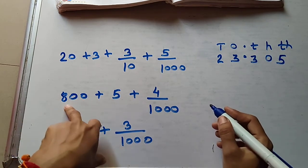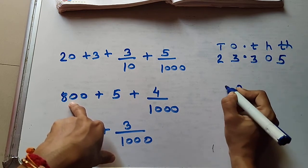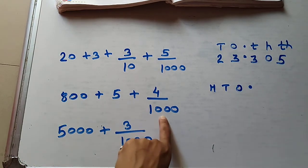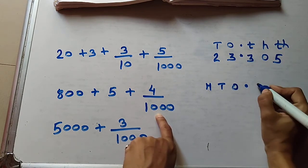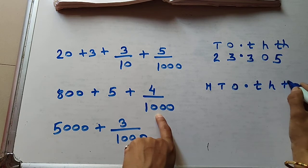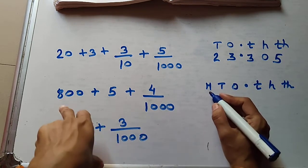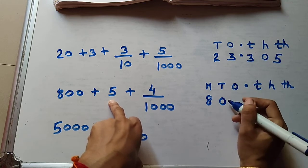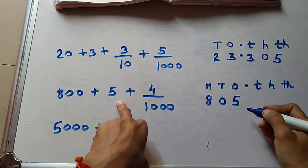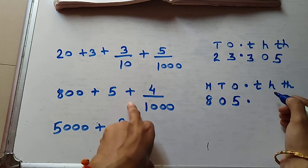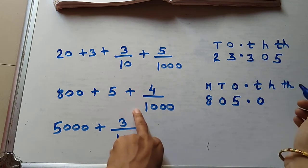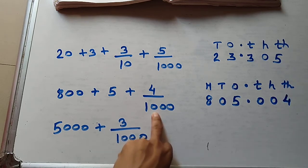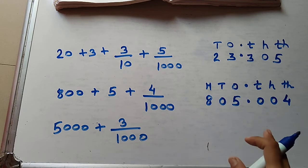See the next example. The greatest place is the hundreds. Write ones, tens, hundreds. After decimal point, fraction goes up to thousandths: tenths, hundredths, thousandths. 800 is hundreds, no tens so write 0, ones place is 5 — giving 805. Decimal point. No tenths place, write 0. No hundredths place, write 0. Thousandths place is 4. So the number is 805.004.